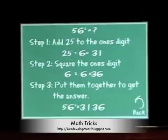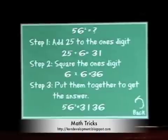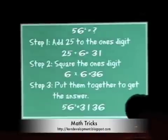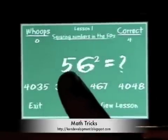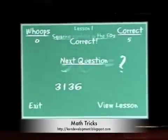As you can see: step 1, you add 25 to the 1's digit — 31. Step 2, square the 1's digit — 36. Step 3, put them together — 3136. If you go back, you can see that 3136 is the correct answer.